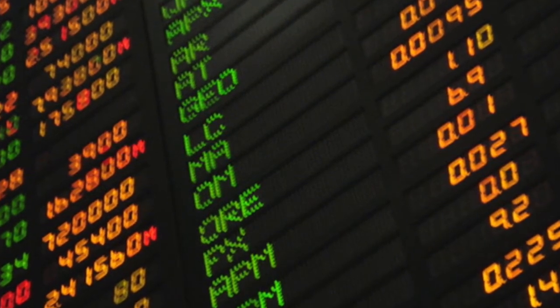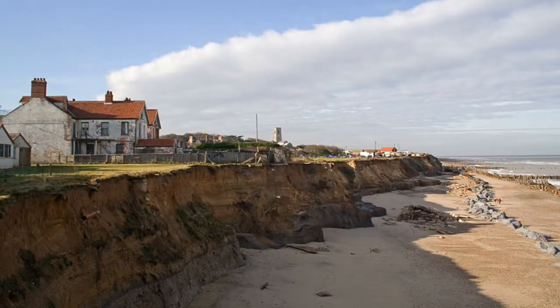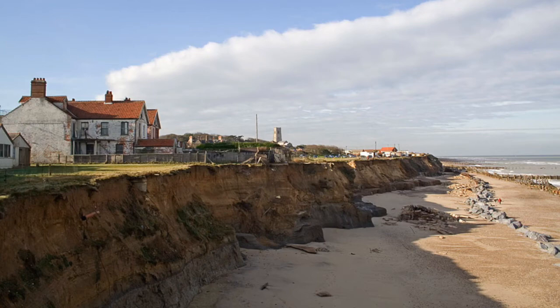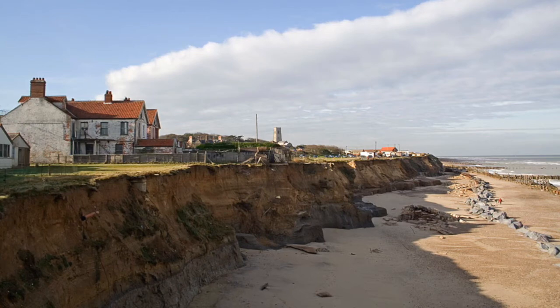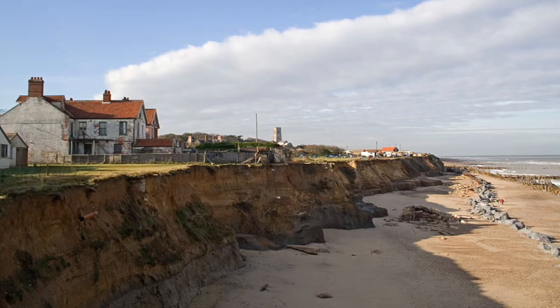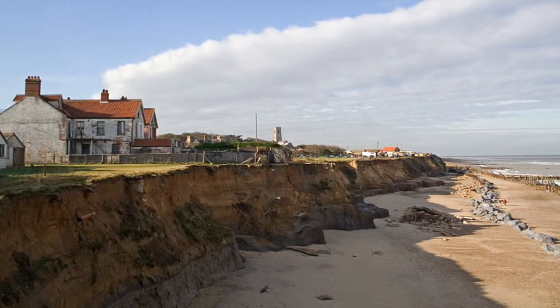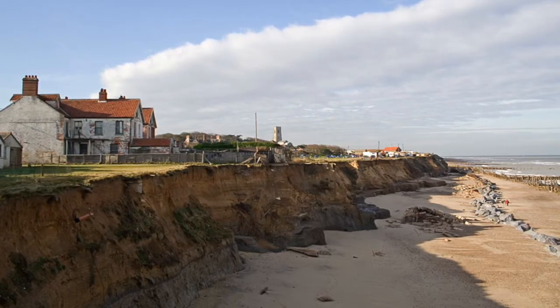Another example of a time-based fractal is something we came across in Part 1, the changing length of the coastline of an island, such as Great Britain. At any given moment, the coastline is a purely spatial fractal, the measured length of which depends on the magnification factor.